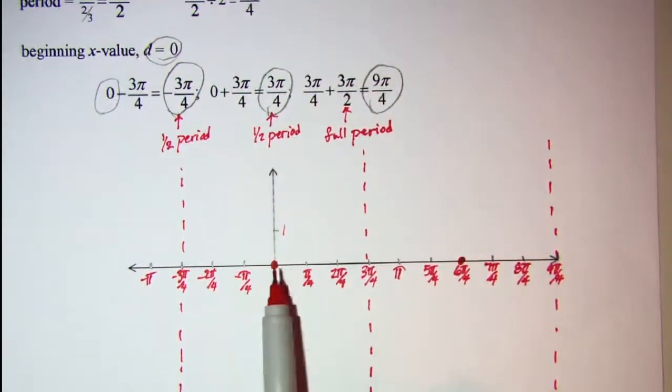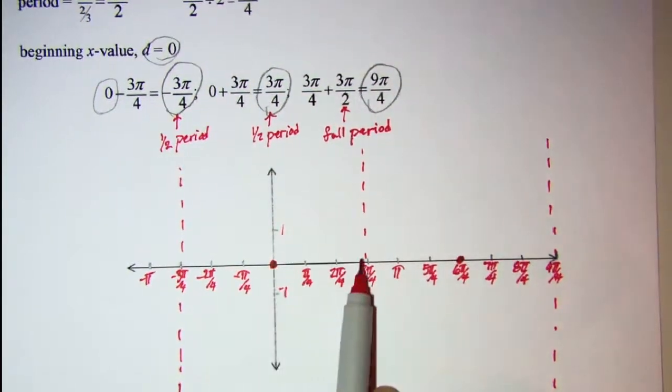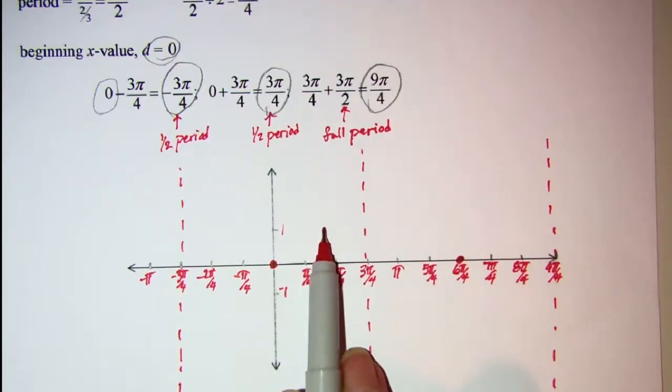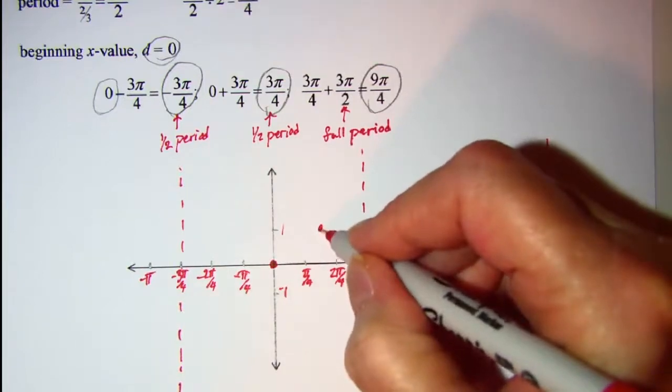Then halfway between my zero and my asymptote, which will be right here, I have what would be the 45 degree angle on that basic tangent function. The value there is 1, so I'll put a point there.